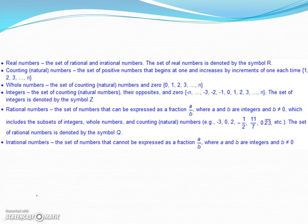Within the group of real numbers, we start with counting or sometimes referred to as natural numbers. These are the set of positive numbers that begin at 1 and increase by increments of 1 each time. So they start 1, then 2 and 3 and so on. The next category is whole numbers. Whole numbers contains the set of counting or natural numbers and also includes the number 0. So it starts out at 0, then 1, then 2, then 3 and so on.